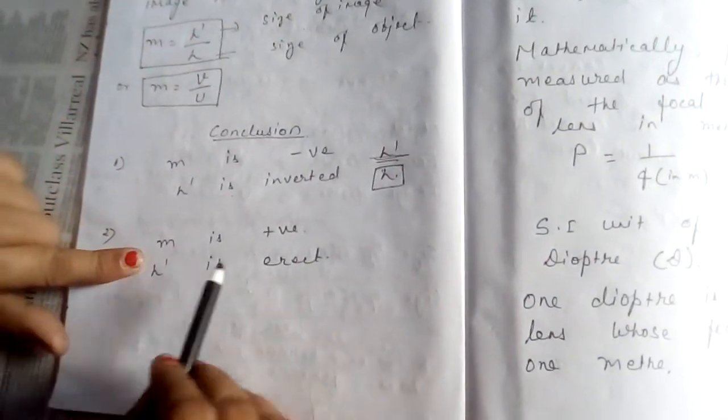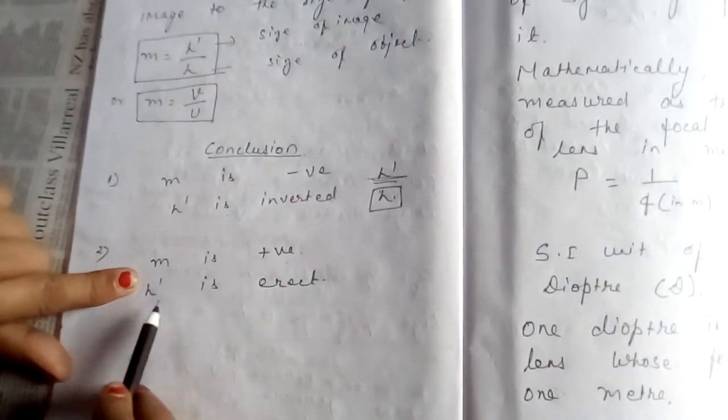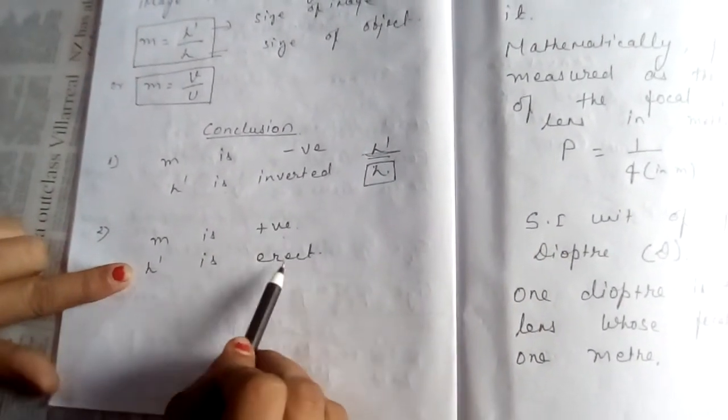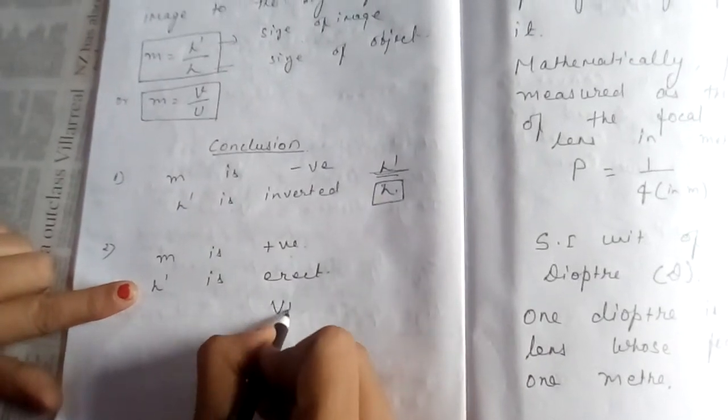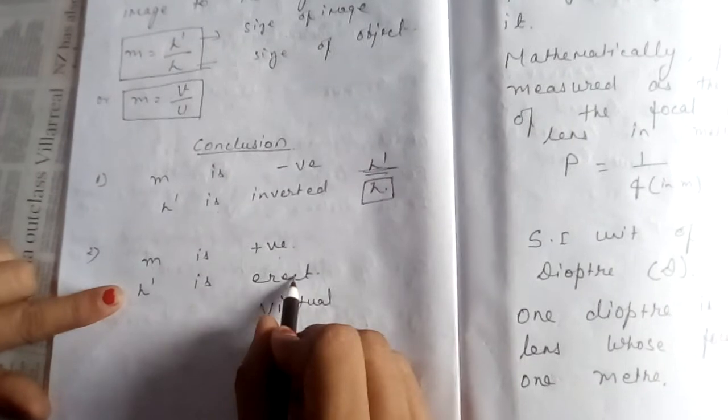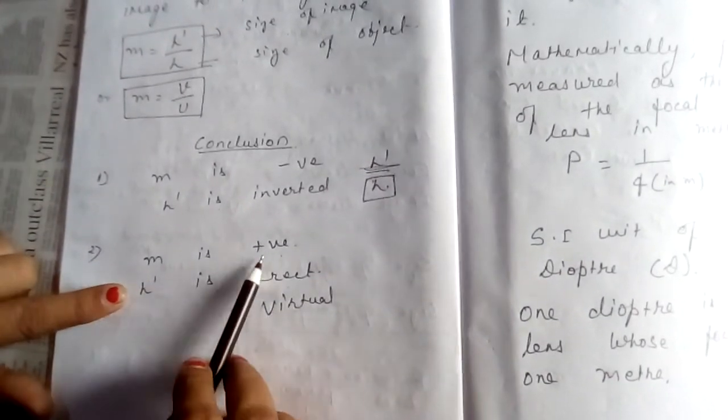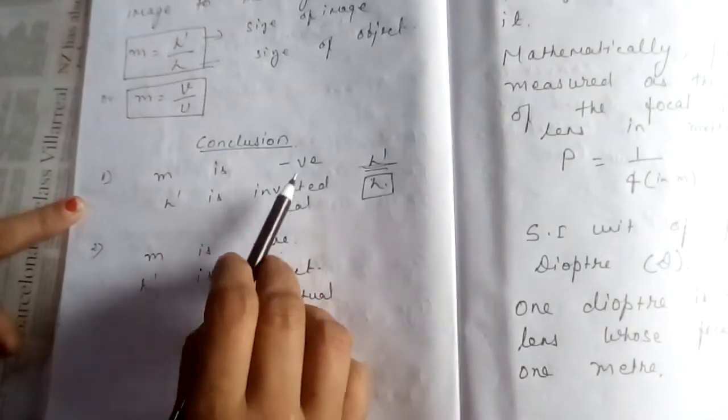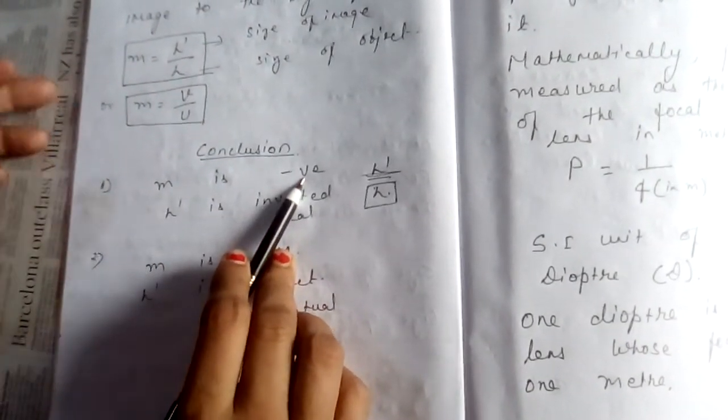M is positive. H dash is erect. That means we will get a virtual image, virtual erect image. Magnification is positive. Real inverted image, magnification is negative.